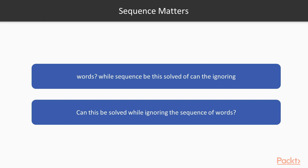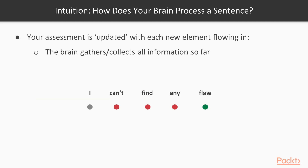Let's take another example — sentiment analysis. Whenever a sentence is formed or when we hear a sentence, our brain processes it and we form a positive, negative, or neutral sentiment for that particular sentence. It takes the entire sentence and forms a sentiment about it. Let's try to do this word by word — I'll bring up one word at a time and see what sentiment is formed.